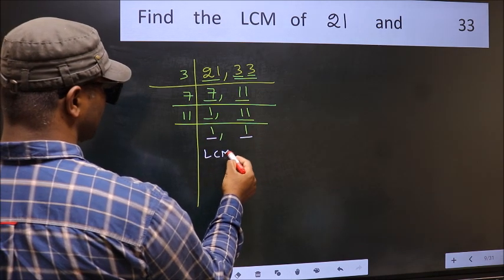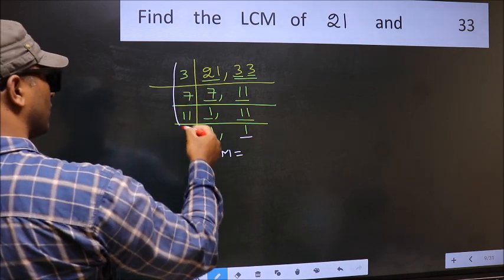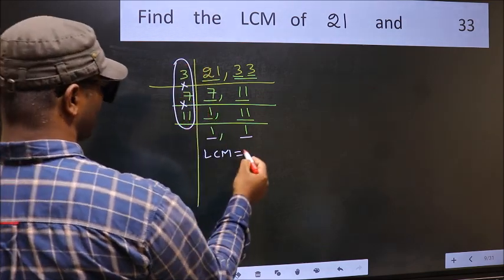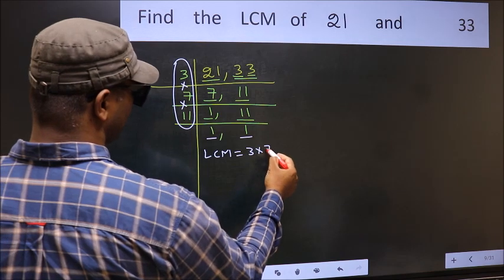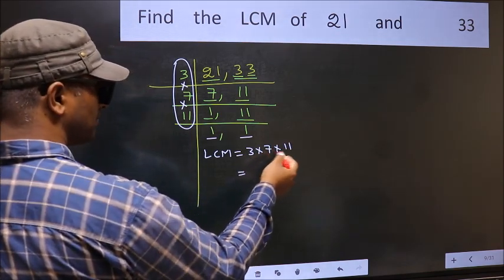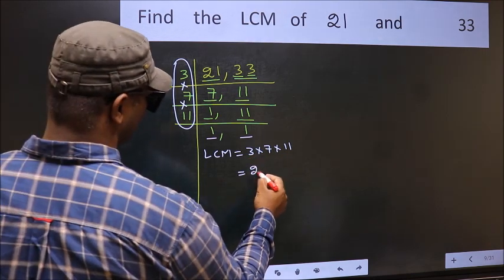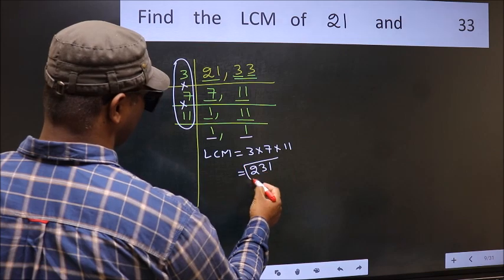So our LCM is the product of these numbers. That is 3 times 7 times 11. When we multiply these numbers, we get 231 as our LCM.